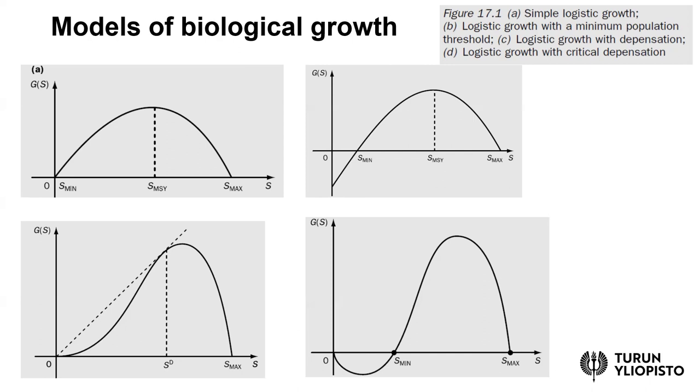There can also be a critical minimum level in the bottom right figure, where if the size of the population decreases below S min, the growth rate turns actually negative. This requires that there is first this convex part, and then it turns to concave a little bit later.